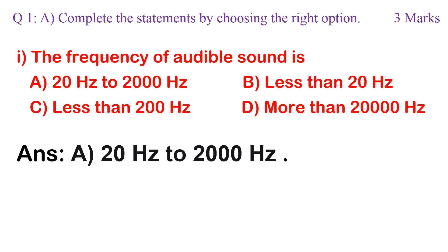Question 1: The frequency of audible sound is: a. 20 Hz to 2000 Hz, b. less than 20 Hz, c. less than 200 Hz, d. more than 20,000 Hz. Correct option is a. 20 Hz to 2000 Hz.